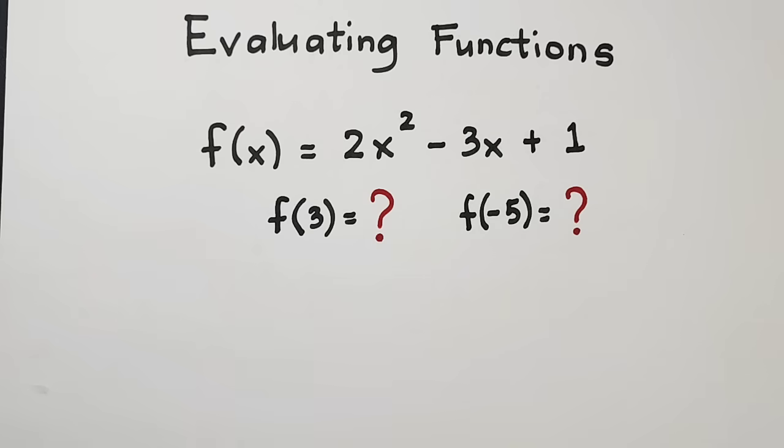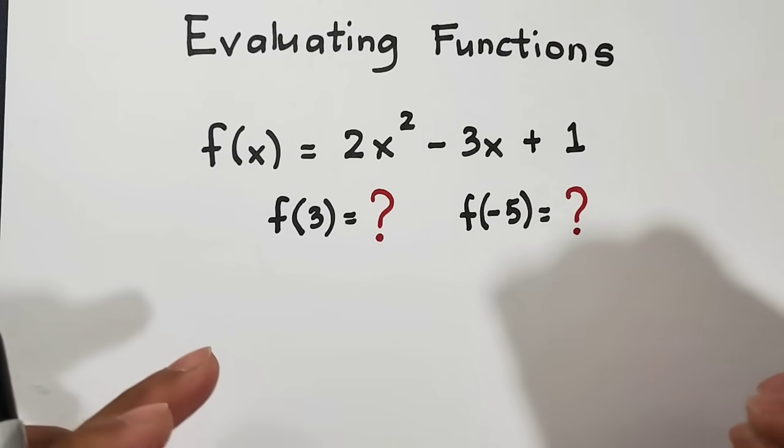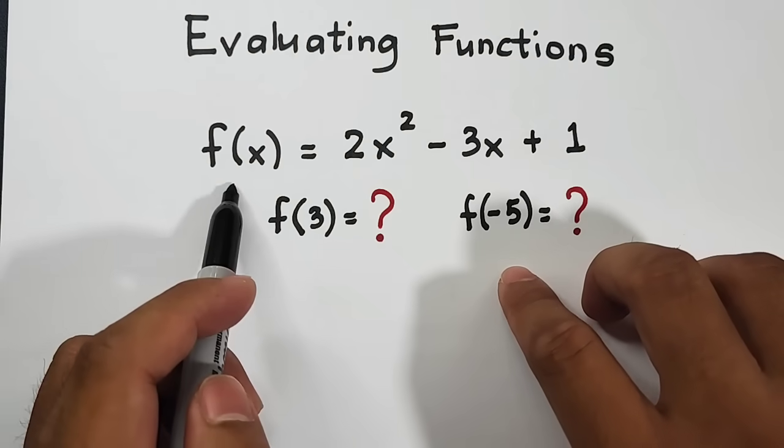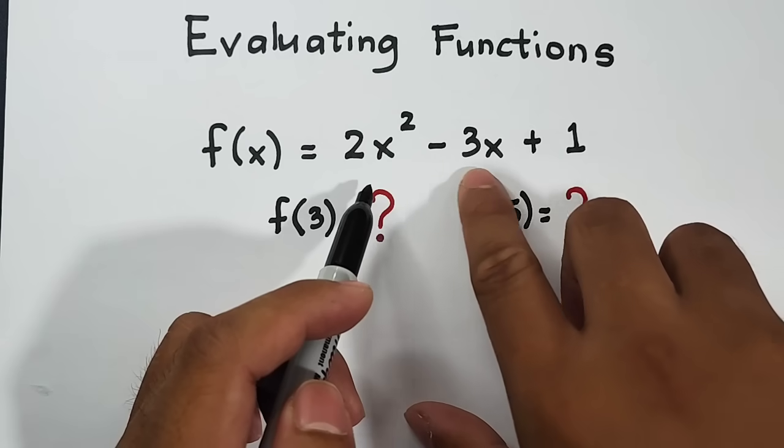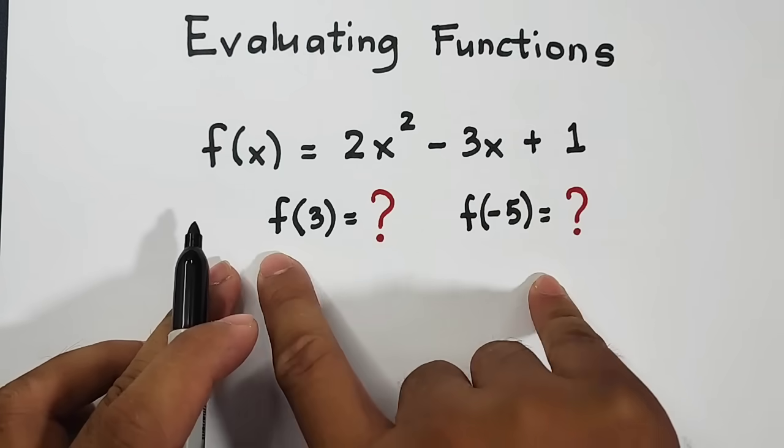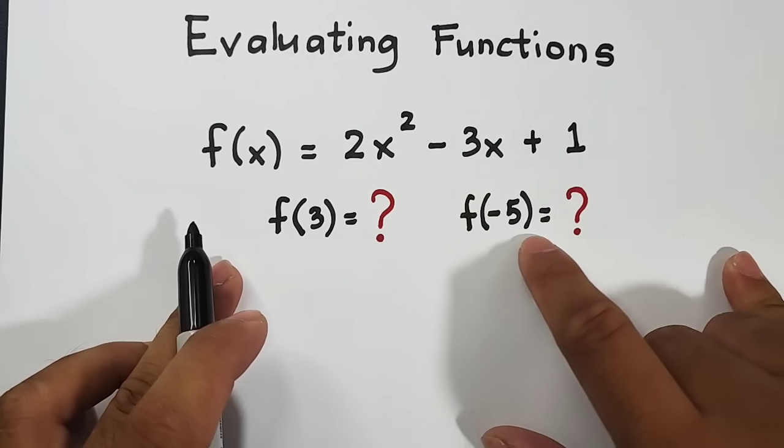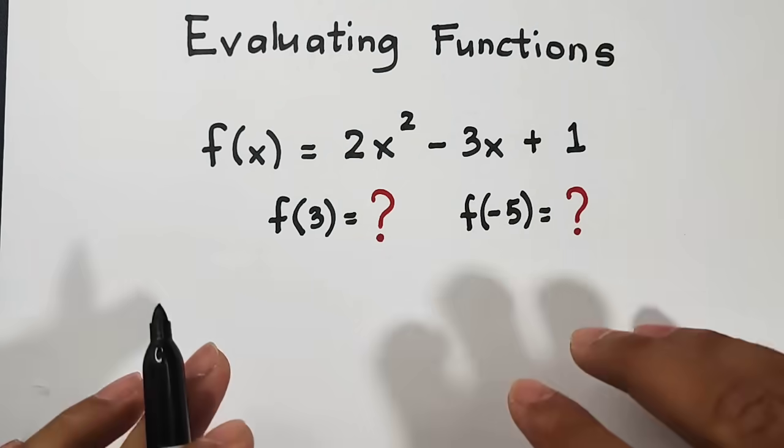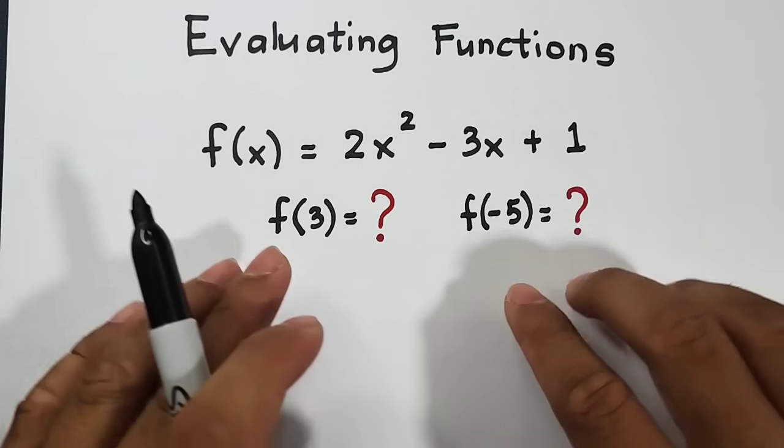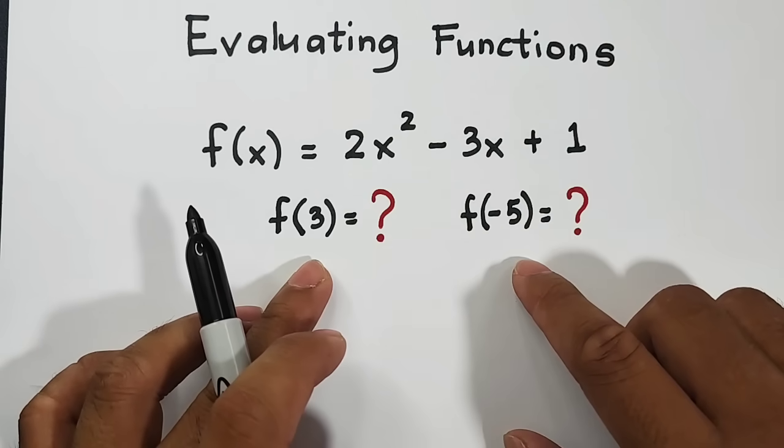So let's try and evaluate the given function. So the question here, how do we evaluate a function? We have f of x is equal to 2x squared minus 3x plus 1. And we are asked here, what is f of 3 and what is f of negative 5? So we have to do two solutions here. Given one function, we are asked to find two values: f of 3 and f of negative 5.